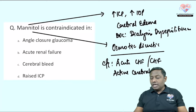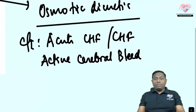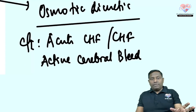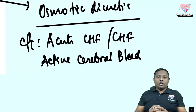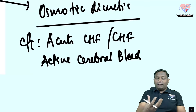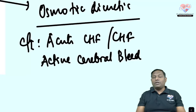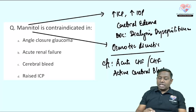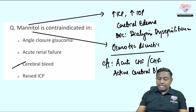Mannitol is also contraindicated in active cerebral hemorrhage. If there is active cerebral bleeding and mannitol is given, its osmotic activity can pull more fluid into the brain parenchyma, worsening cerebral edema. Therefore the correct answer for this question is option C. Angle-closure glaucoma is not a contraindication.